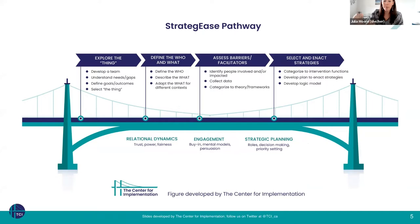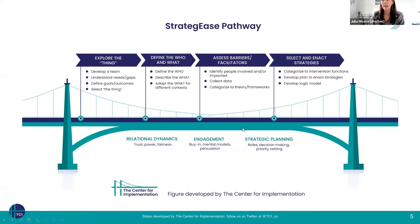From there, we want to understand what are the barriers and facilitators to change — why might people change, and why won't they change? We like to use behavior change theory so that we pick change strategies — things like education, reminders, champions, communities of practice, audit and feedback — that directly address people's underlying barriers and facilitators to change, to increase the likelihood they'll actually change. Importantly, this entire pathway rests on things like relationships, dealing with power and trust, engagement, and strategic planning.